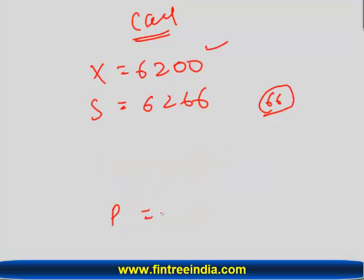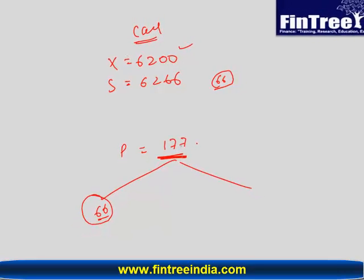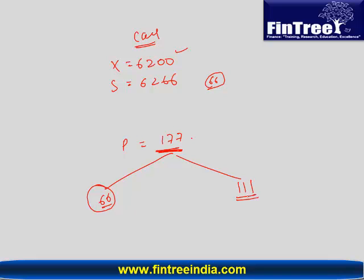So premium of this option is 177. So what do you see? This premium is actually made of two parts. One is the 66 that if I exercise today, if I was allowed to exercise today, then the benefit I would have had was 66. But the price is 177, which means there is 111 extra here. That extra price of an option is called the time value of the option. And if I exercise today, the immediate benefit that I'll have, this is called as intrinsic value of the option.